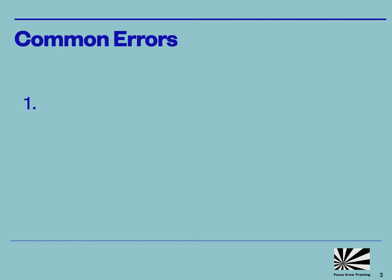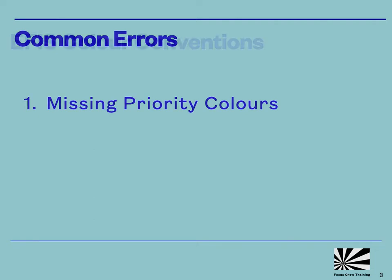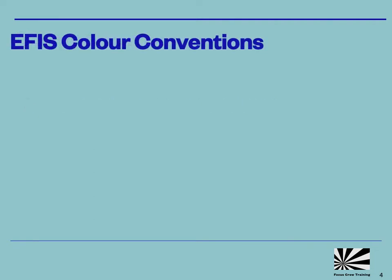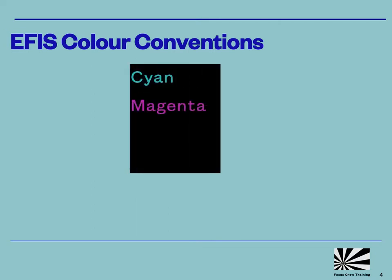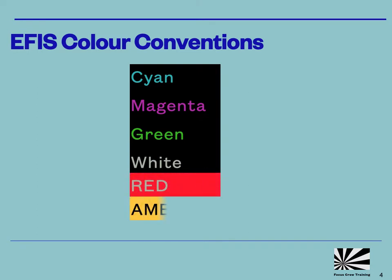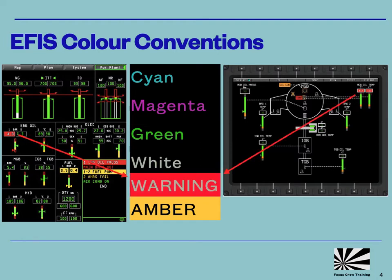The first issue we'll look at is simply the failure to notice priority colours on the primary flight display. The colours we should see all the time on our flight displays are cyan, magenta, green and white. The colours which should really catch our attention are red and amber. When these colours appear on the MFD, pilots are normally quick to identify what's happening — the attention getters from the crew alerting and warning systems clearly help with this.